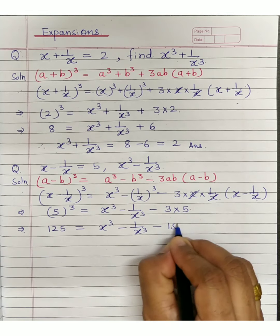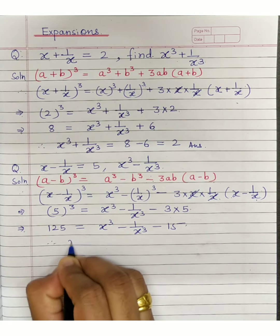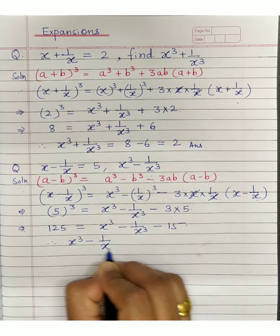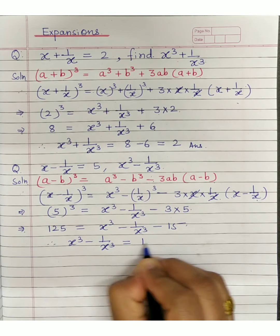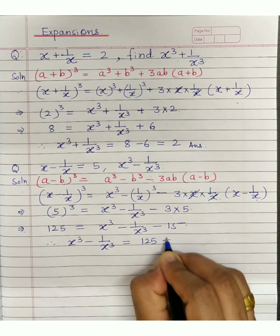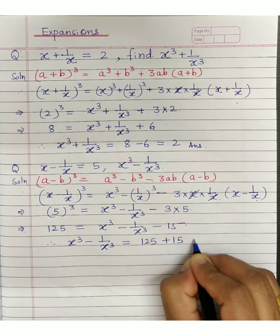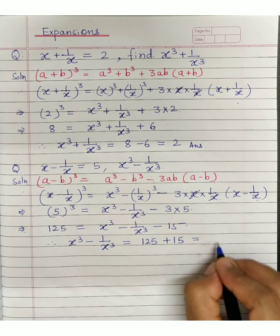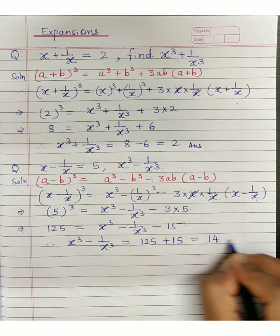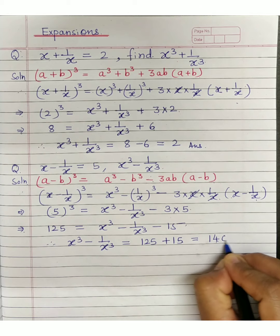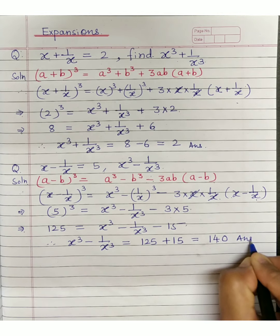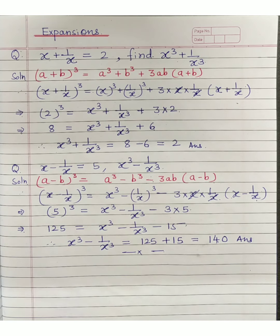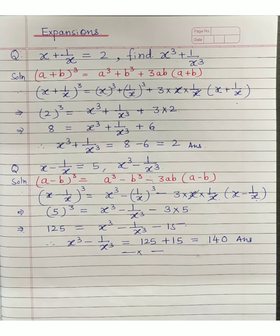5 cube is 125, equals x cube minus 1 upon x cube, minus 3 times 5 which is 15. Shifting minus 15 to the right hand side gives plus 15, so x cube minus 1 upon x cube equals 140. The answer is 140.